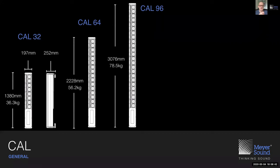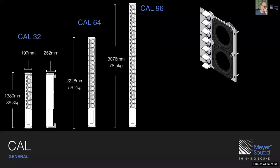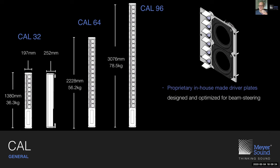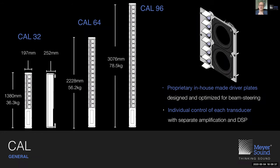The three models are: the CAL32, because it has 32 transducers; the CAL64, which is twice as long with 64 transducers; and the CAL96, which is one and a half times longer than the CAL64 with 96 transducers. It's a modular approach — a driver plate has two 4-inch cone drivers and six 20mm tweeters, and multiple instances of this driver plate make up the CAL32, CAL64, or CAL96. Every transducer is amplified and processed separately, and all driver plates are produced and assembled in-house.